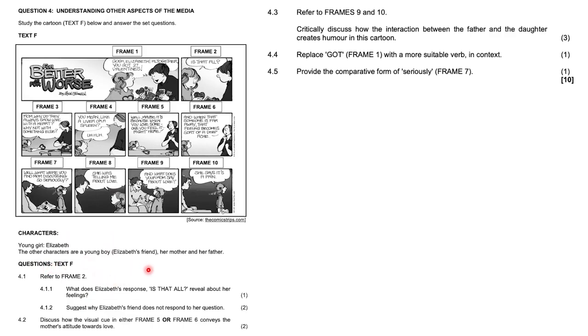So the young girl is Elizabeth, and the other characters are young boy, Elizabeth's friend, her mother and her father. Refer to frame 2: what does Elizabeth's response 'is that all' reveal about her feelings? She's disappointed, she's dissatisfied at the whole situation. She's unimpressed. She's like, oh really, 27 valentines, is that all? She's not feeling it.